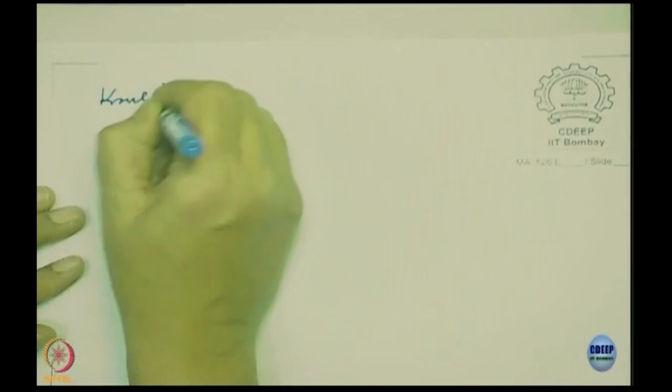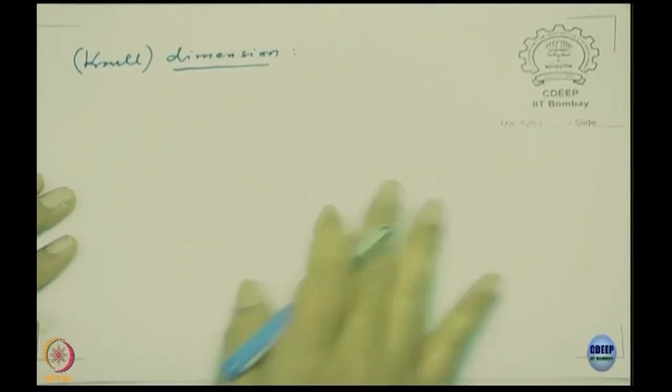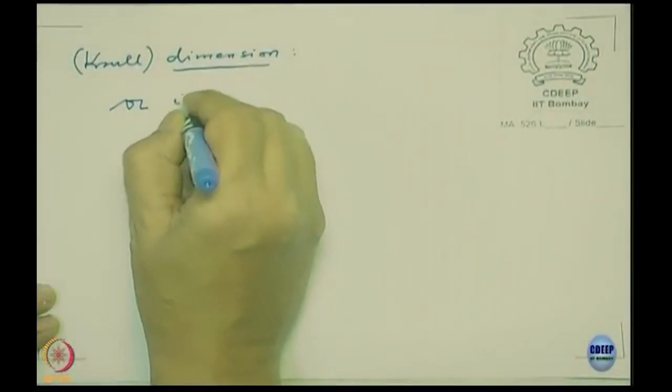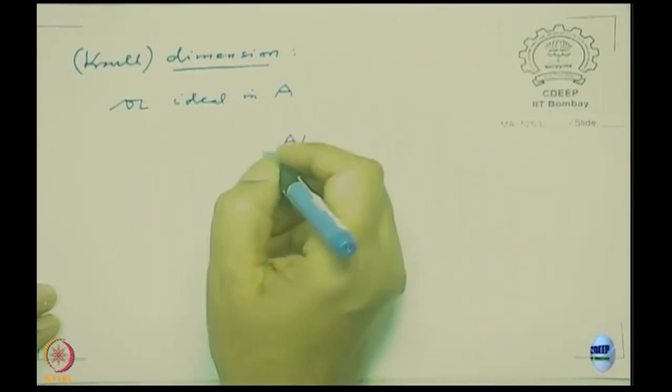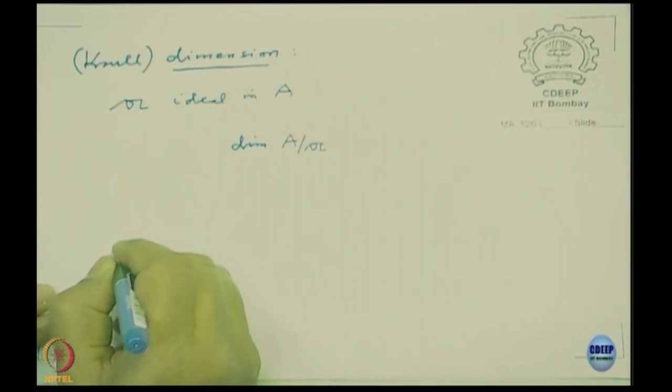I want to recall the definition of Krull dimension. Krull was the professor who proposed this algebraic definition, looking at older geometric definitions which were more intuitive. The Krull dimension of ring A, which I denote dim A — being careful not to confuse it with vector space dimension — is defined by looking at chains of prime ideals: p_0 ⊂ p_1 ⊂ … ⊂ p_r (proper inclusions). The length of such a chain is r. The dimension is the supremum of r over all such chains in Spec A.